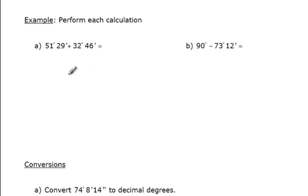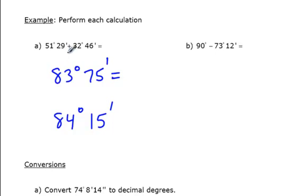For example, perform each calculation. Let's take 51 degrees, 29 minutes and add on to it 32 degrees, 46 minutes. So we're going to add the degree part together first. 51 degrees plus 32 degrees make 83 degrees. And 29 minutes plus 46 minutes give us 75 minutes. However, this value cannot be larger than 60. 60 minutes make a whole degree. So we have 60 minutes inside the 75 minutes. So that's an additional degree. So we'll bump that up to 84. And 75 minus 60 is 15 minutes. So 51 degrees, 29 minutes plus 32 degrees, 46 minutes gives us 84 degrees, 15 minutes.